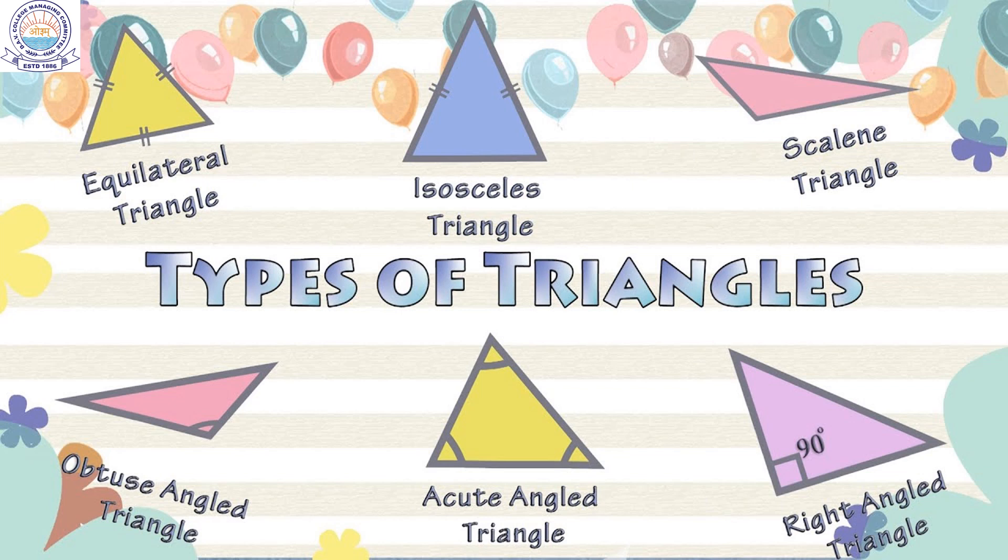On the basis of angles, triangles are classified into the following types: acute angled triangle, right angled triangle, and obtuse angled triangle.